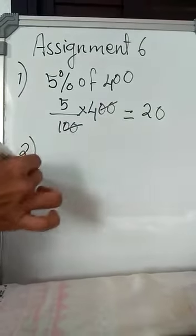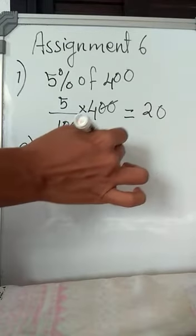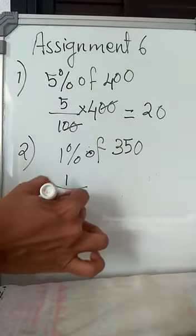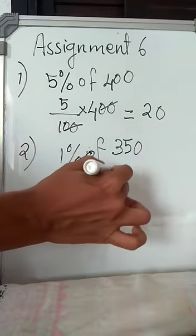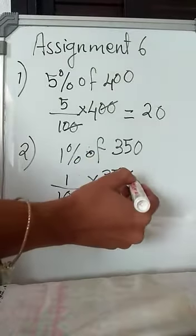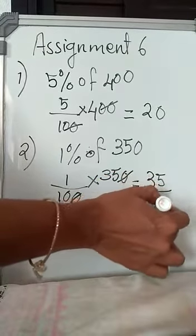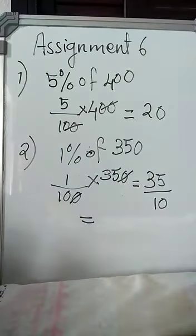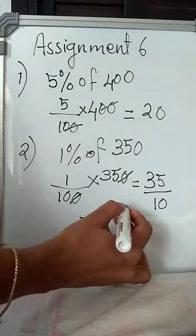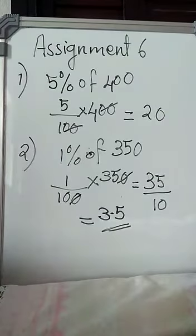Second question given is 1% of 350. So this will be 1 by 100 into 350. Now you can cut one of the zeros. So what will you get? The numerator will be 35 and the denominator will be 10. Now 3 by 10, the fraction you can write as decimal. Decimal number, how will you write it as 3.5? So 3.5 is the answer, 1% of 350.